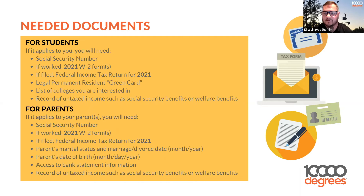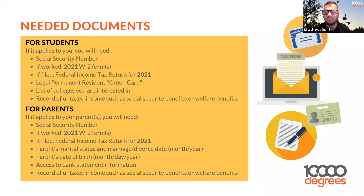A question: if you list colleges and submit your FAFSA, but later add colleges you're applying to, can you adjust that? Yes, you can. If a parent is self-employed and doesn't have a W-2, what does the government want? If you're self-employed, it's a W-9, and you would use that document instead.